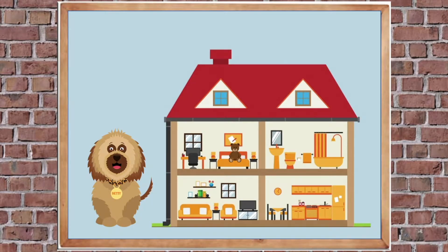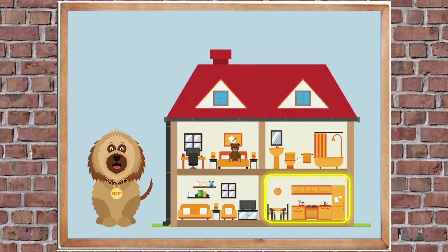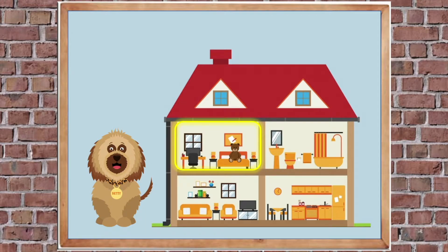Here's Betty with her doll's house — she loves playing with her dolls. We've got lots of different rooms. There's the living room, the kitchen, the bathroom, and the bedroom — you can see the bedroom because there's a teddy on the bed. We're going to use special words to describe where each room is.